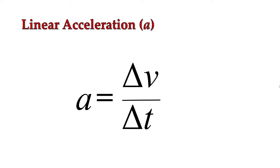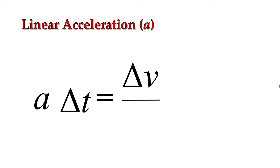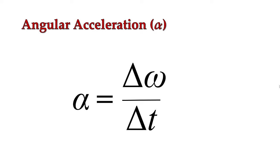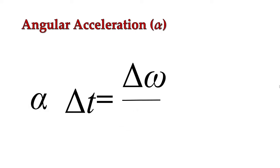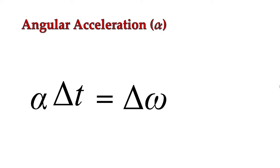Linear acceleration was how quickly our velocity was changing in a particular direction. Mathematically, that equals the change in velocity divided by the change in time. We can manipulate the equation to find the change in velocity: it equals acceleration multiplied by the change in time. Now, angular acceleration — denoted by the Greek letter alpha — is how quickly our rotation is changing. Angular acceleration equals the change in angular velocity divided by the change in time. The final change in angular velocity equals angular acceleration multiplied by the change in time.